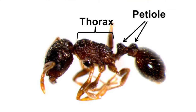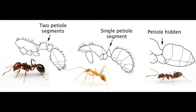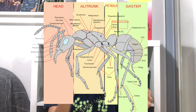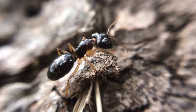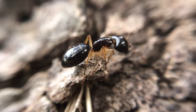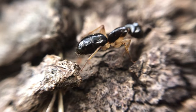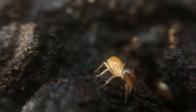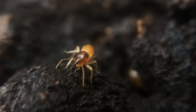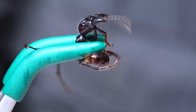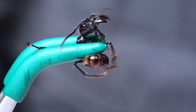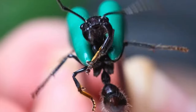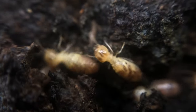In terms of anatomy, ants have a petiole — one or two segments between the mesosoma and gaster — and have harder exoskeletons. Termites only possess this hard covering over their heads. They also cannot sting or spray formic acid.